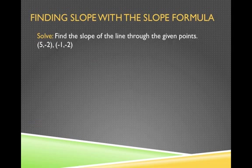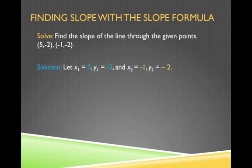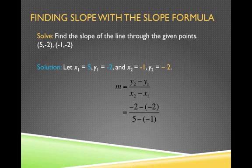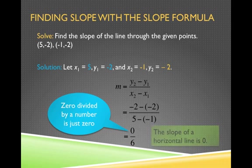Let's find the slope of the line through (5, -2) and (-1, -2). I label x1, y1, x2, y2 and plug in to get negative 2 minus negative 2 over 5 minus negative 1 — that gives me 0 over 6. What is 0 over 6? Imagine a pizza cut into 6 slices and you eat 0 slices — you ate none. 0 over 6 is just 0. Since the slope is 0, that tells us we have a horizontal line, running west to east.